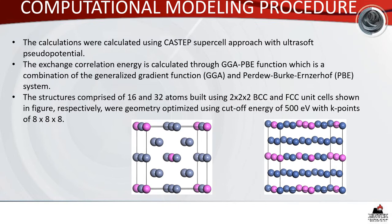For the computational modelling procedure, calculations were done on CASTEP using the supercell approach with ultra-soft pseudopotential. The exchange-correlation energy was calculated through GGA and PBE. The structures were comprised of 16 and 32 atoms built using 2×2×2 for BCC and FCC unit cells. The cut-off energy was 500 eV and the k-points were 8×8×8.